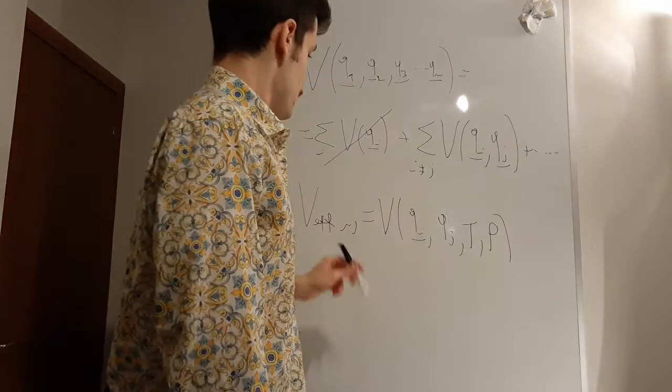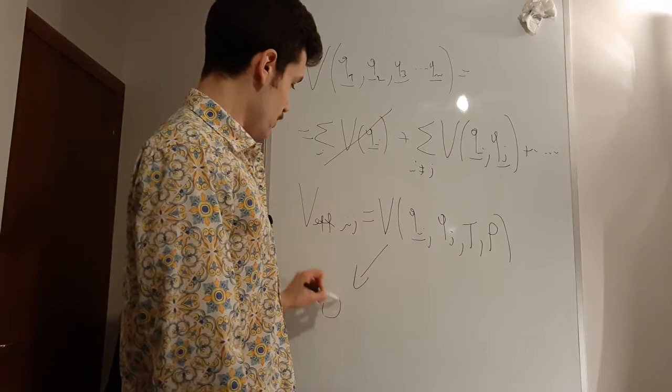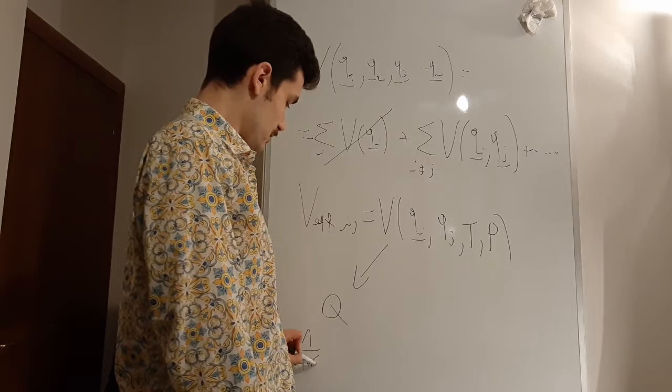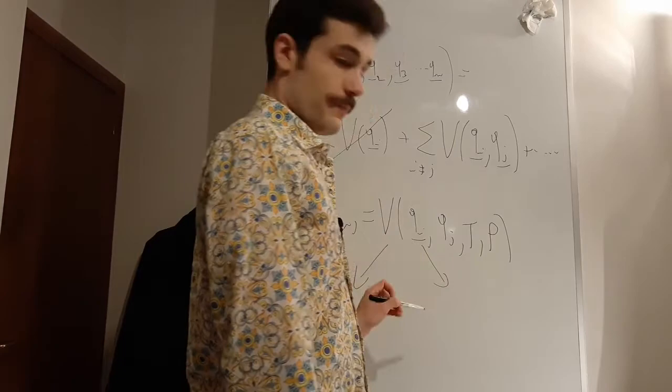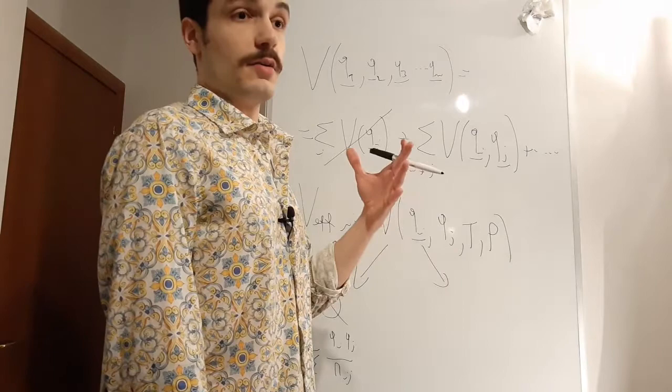But how this is usually done is dividing it in a Coulombic part, that is the usual one: 1 over 4 pi epsilon_0, qi qj over rij. So that's the Coulombic potential.